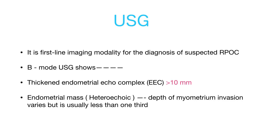What are the findings on ultrasound? The B-mode or grayscale ultrasound shows one of two findings. The first is thickened endometrial echo complexes, where the thickness should be more than 10 mm. The second is an endometrial mass — a mixed echogenic or hetero-echoic mass in the endometrium, with varying depth of myometrial invasion ranging from purely endometrial to less than one-third into the myometrium.